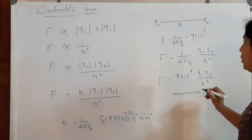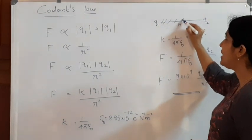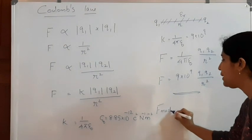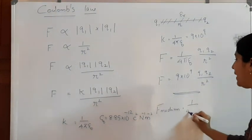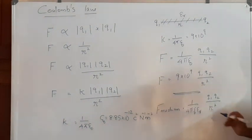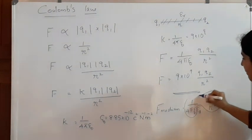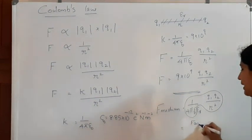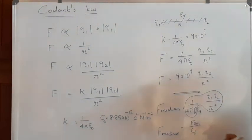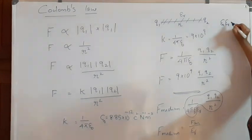This is Coulomb's law if the charges are placed in air or free space. Now if there is a medium in between Q1 and Q2 having relative permittivity ε_R, then the force in the medium is F_medium = (1/4π·ε₀·ε_R) × Q1·Q2/R², which equals F_air divided by ε_R. Here ε₀ × ε_R is the absolute permittivity, that is ε₀ × ε_R = ε.